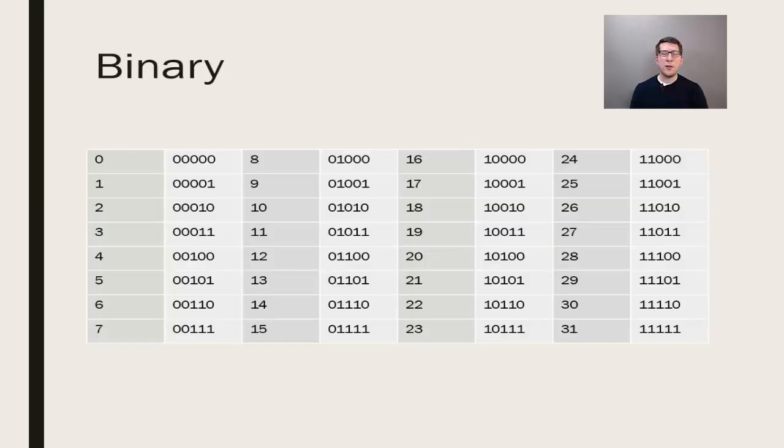A system using only two digits is called binary. With binary, we can represent all of the same numbers that we can in decimal. It just requires more digits. The chart here shows the first 32 binary numbers. You might want to see if you notice any patterns in the way the numbers progress before we move on.